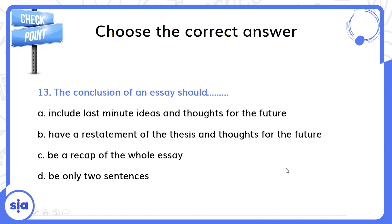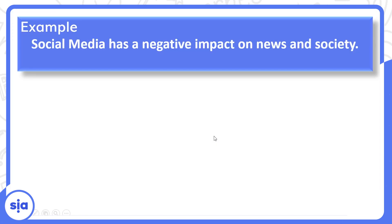The conclusion of an essay should - what should the essay conclusion do? Include last minute ideas and thoughts for the future, have a restatement of the thesis and thoughts for the future, be a recap of the whole essay, be only two sentences. The correct answer is B, because it must have a restatement or rewording of my thesis, and I also talk about thoughts for the future. I give suggestions to people in the conclusion.